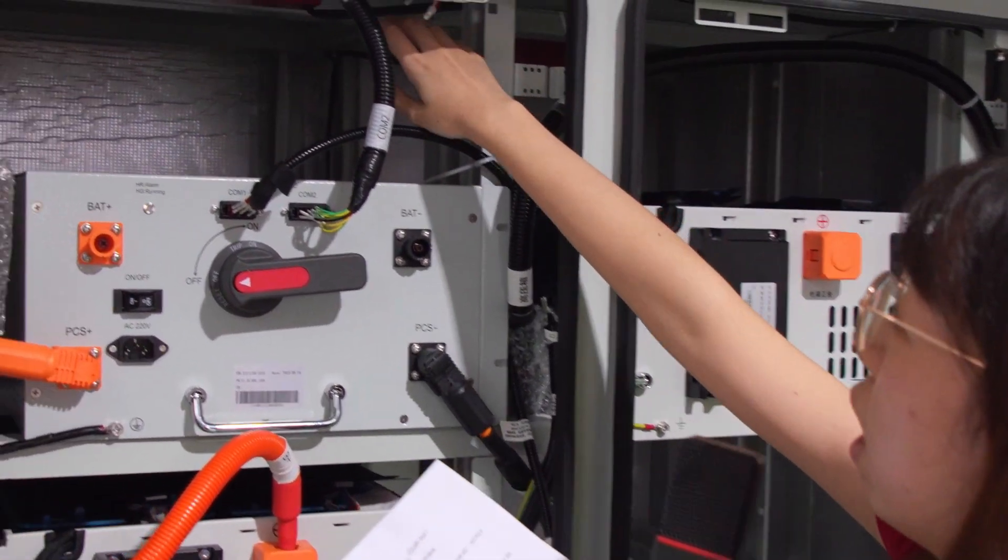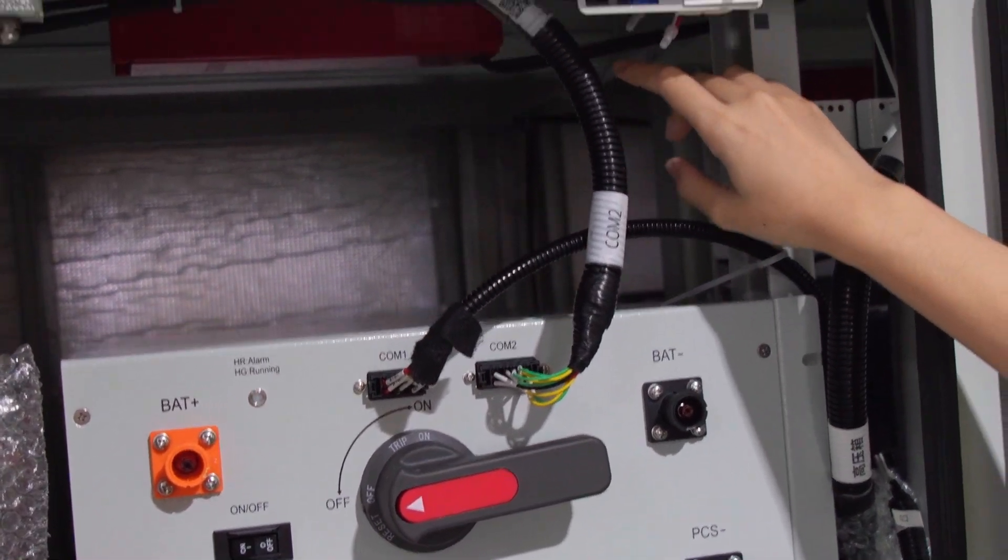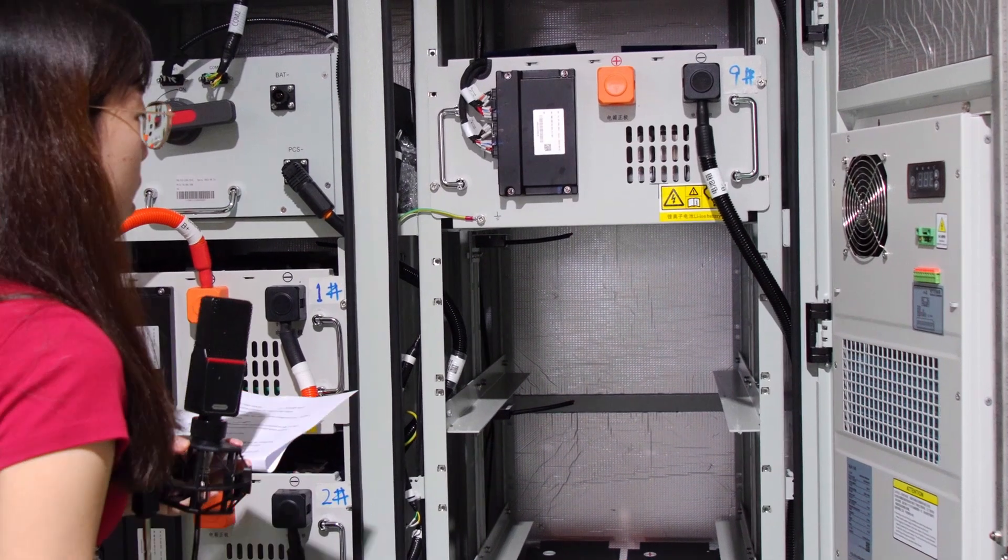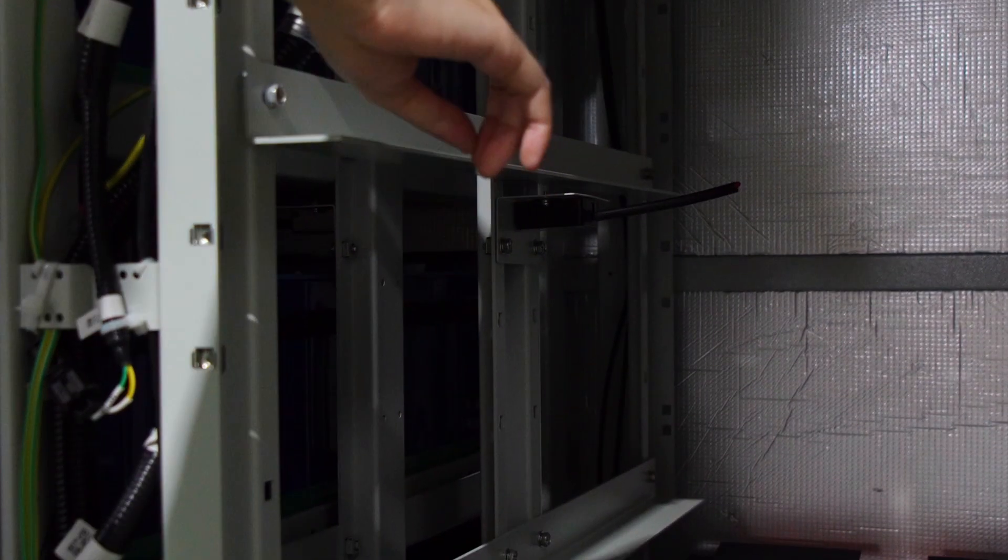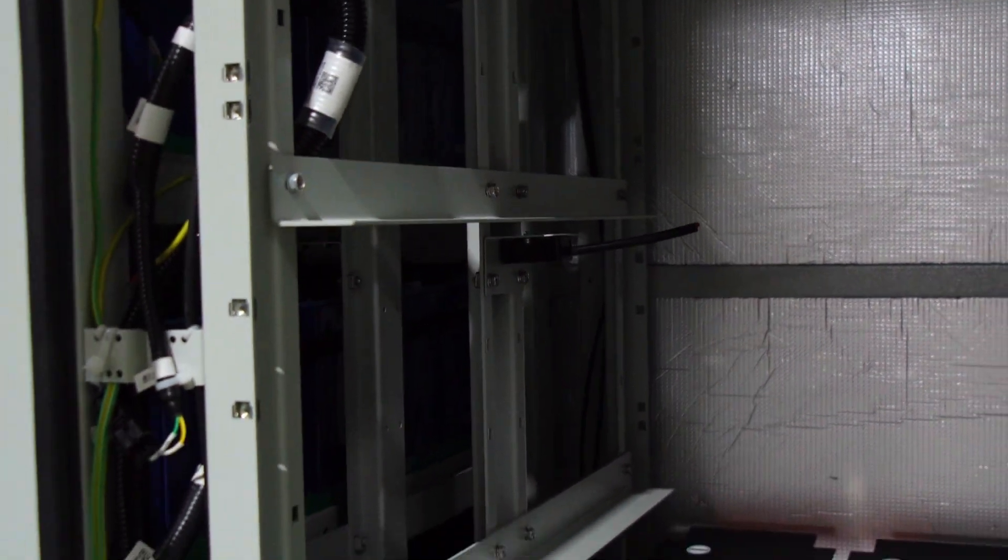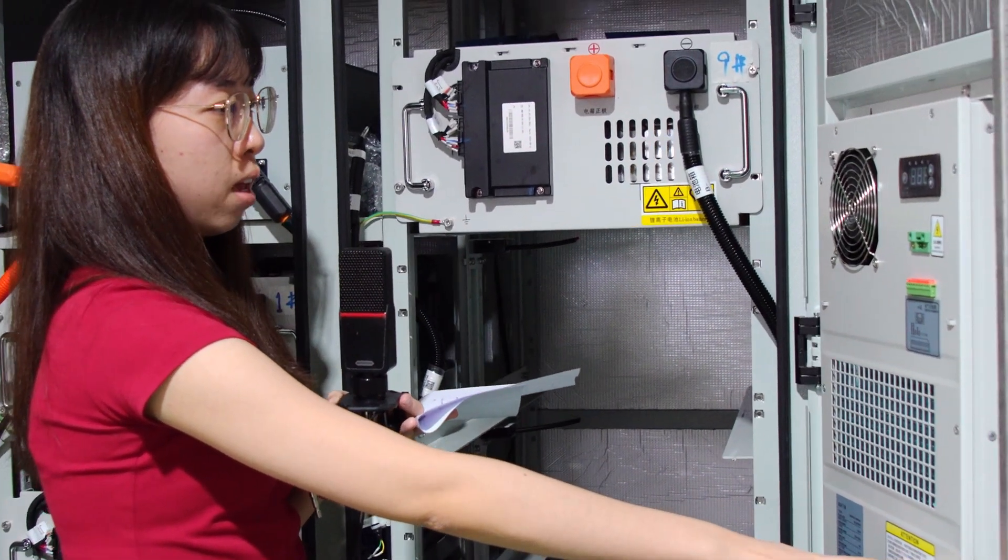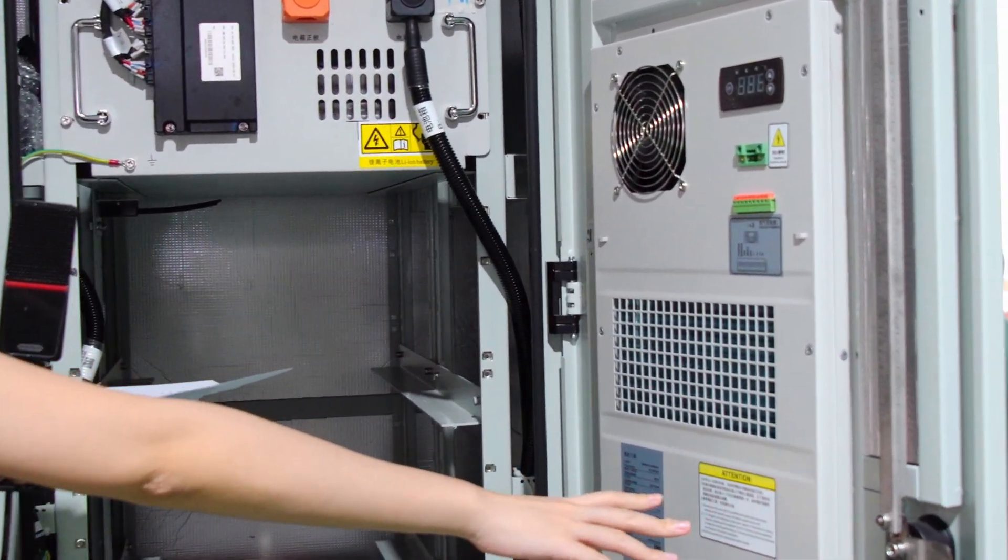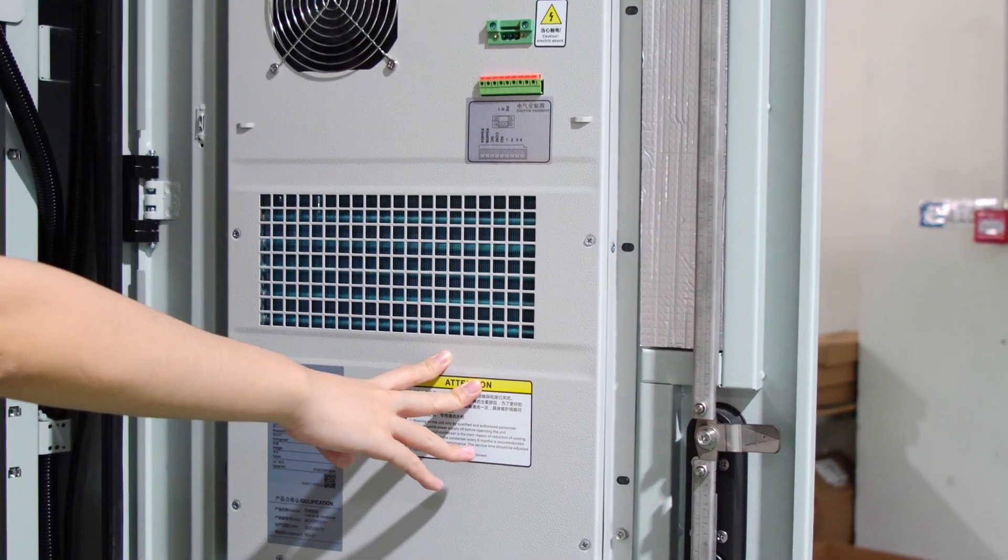The cabinet has built-in fire extinguishing systems on the top and aerosol fire extinguishing systems at the corners. This is the thermal management air conditioner system to ensure the battery system cycle life. Here is the air conditioner system.